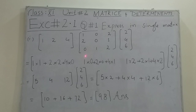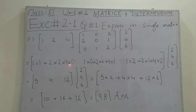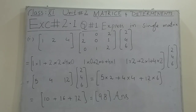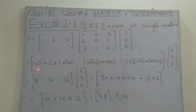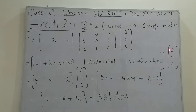Now we multiply the row matrix with each column by cross-pointing elements. First column: one into one plus two into two plus four into zero. Second column: one into zero plus two into zero plus four into one. Third column: one into two plus two into one plus four into two. The third column from the question is written as is: two, four, six. Solving gives: one plus four plus zero equals five; zero plus zero plus four equals four; two plus two plus four equals eight, four plus eight equals twelve. And the last matrix is two, four, six.